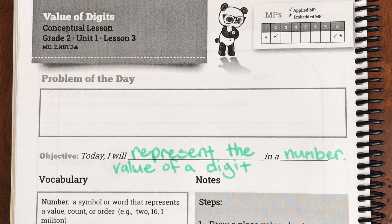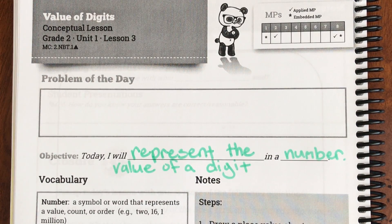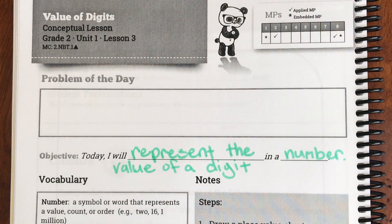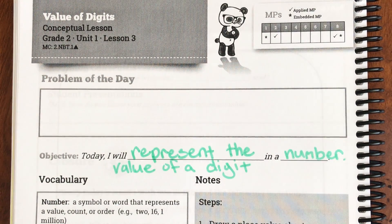Okay so let's look at that objective again. Today I will represent the value of a digit in a number.